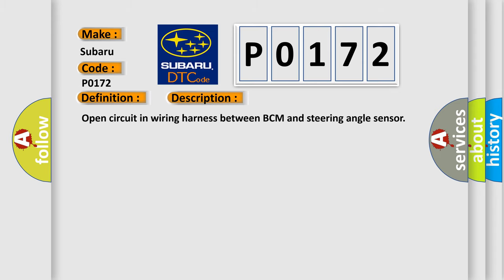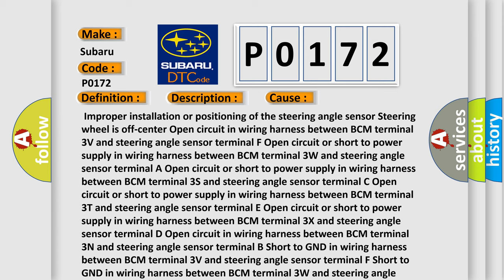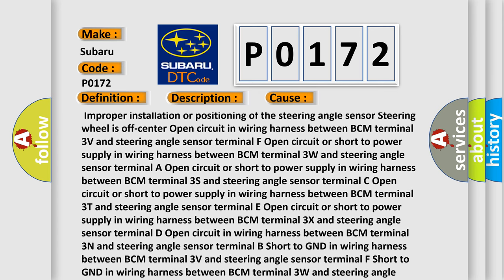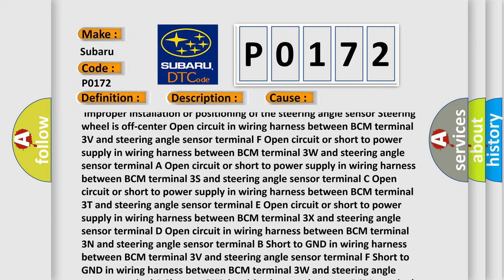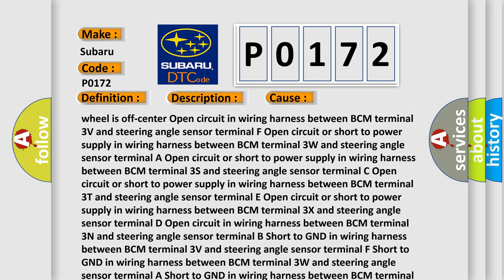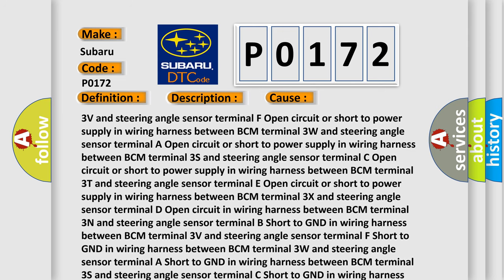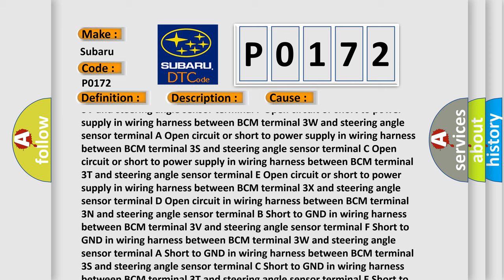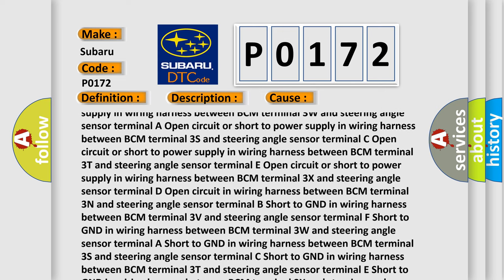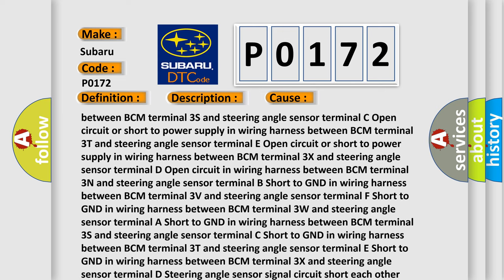Here is a short description of this DTC code. This diagnostic error occurs most often in these cases: open circuit in wiring harness between BCM and steering angle sensor; improper installation or positioning of the steering angle sensor; steering wheel is off-center; open circuit or short to power supply in wiring harness between BCM terminal 3V and steering angle sensor terminal F; BCM terminal 3W and terminal A; BCM terminal 3S and terminal C; BCM terminal 3T and terminal E; BCM terminal 3X and terminal D.